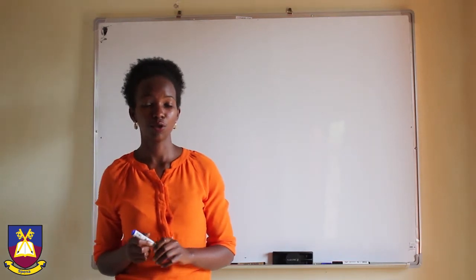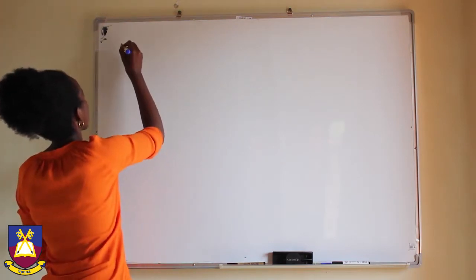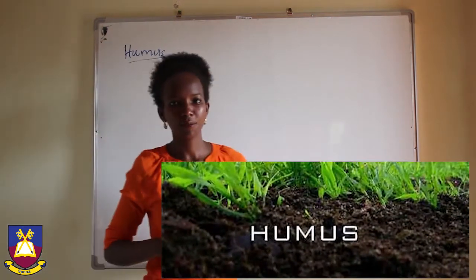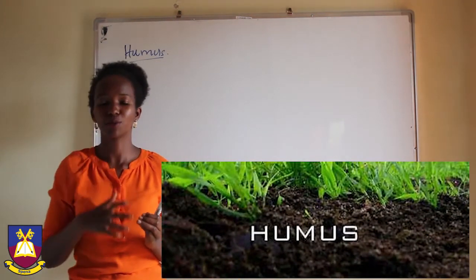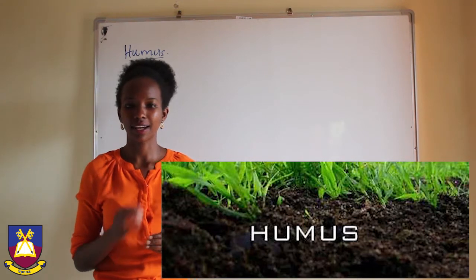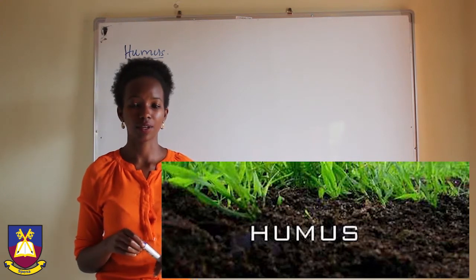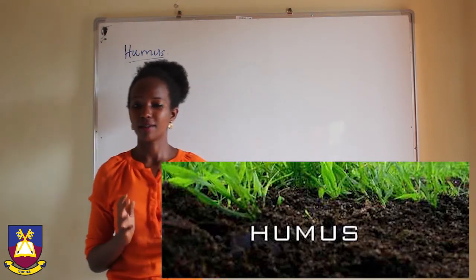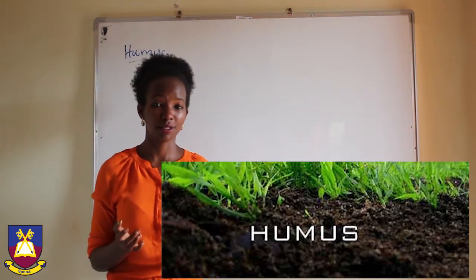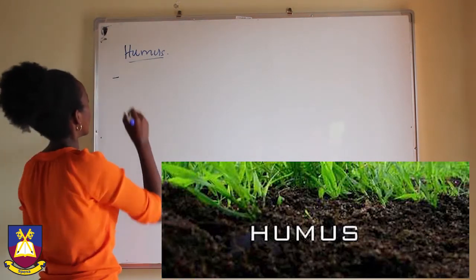The fourth component we are going to look at in detail is humus. Humus is that part of soil that is formed as a result of the decaying of matter. It is usually very dark in color, and it is responsible for the dark nature of especially loamy soil, because loamy soil has a reasonable amount of humus.